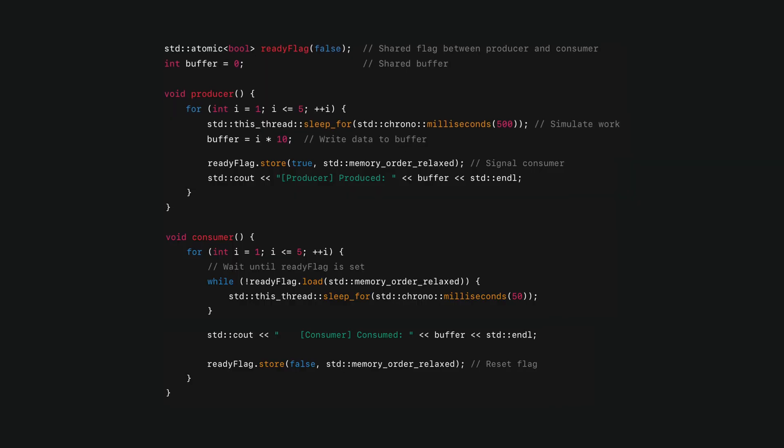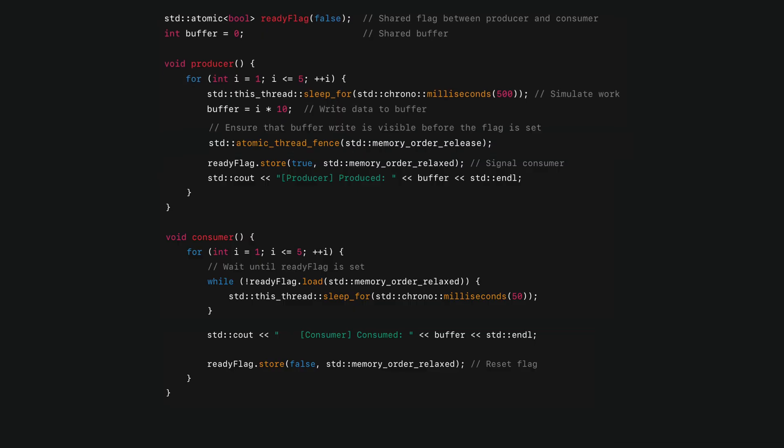To fix that, you add a store-to-store fence or full memory fence between writing the data and setting the flag. This tells the CPU: do not reorder these two stores. Data must be visible before the flag.